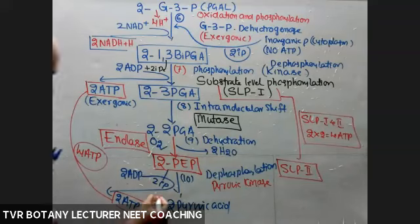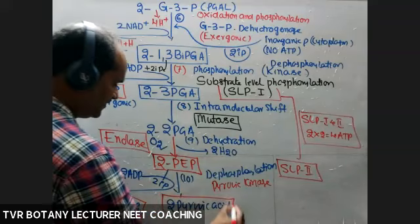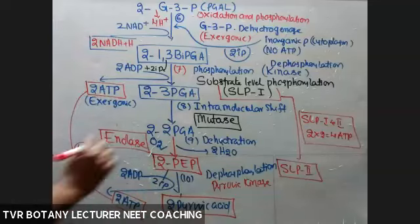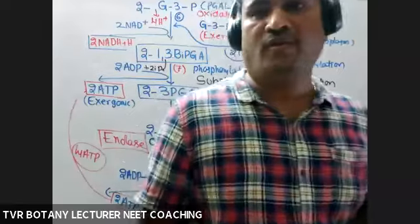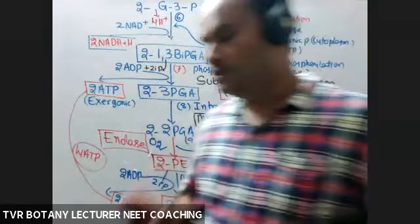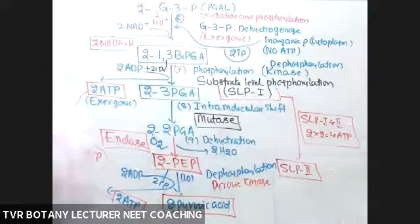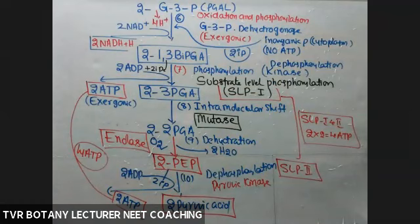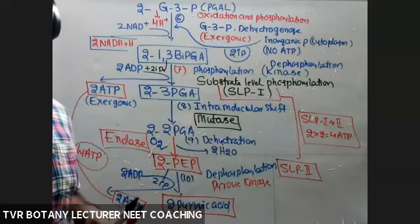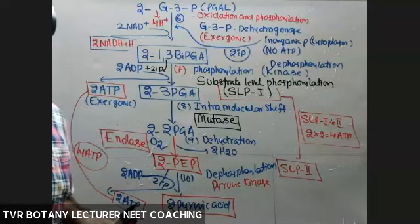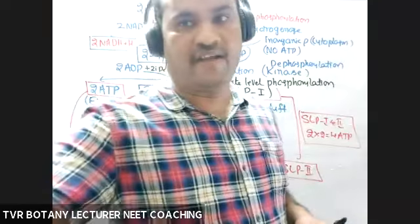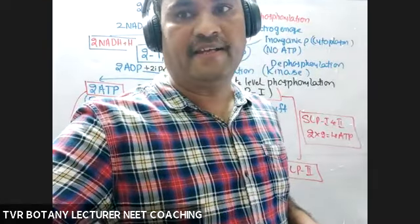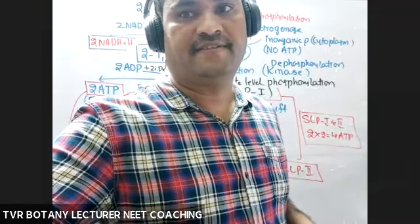Thus, glycolysis is complete — the partial oxidation of one glucose molecule into two pyruvic acid molecules. We will discuss the energetics of glycolysis in the next class.